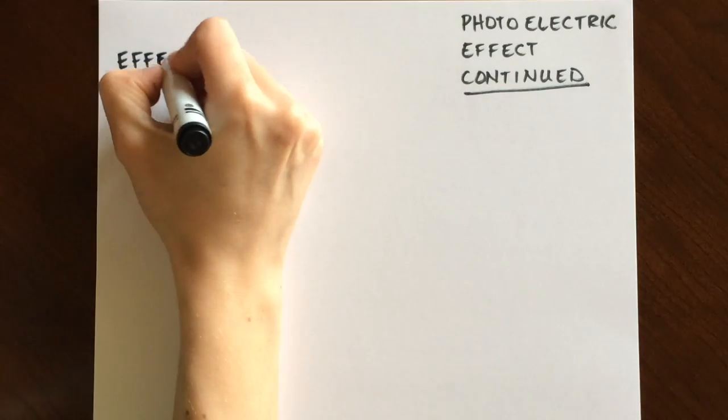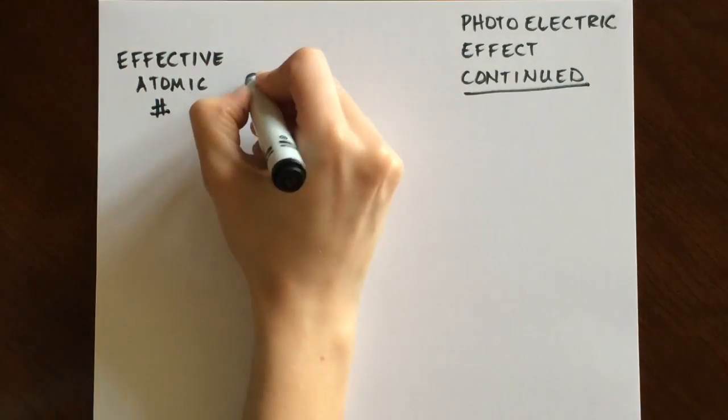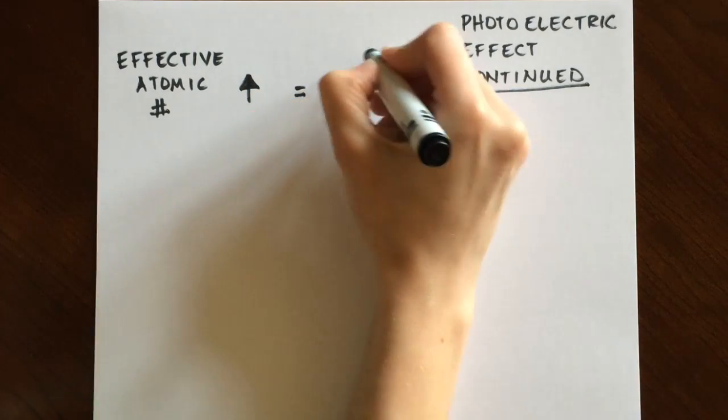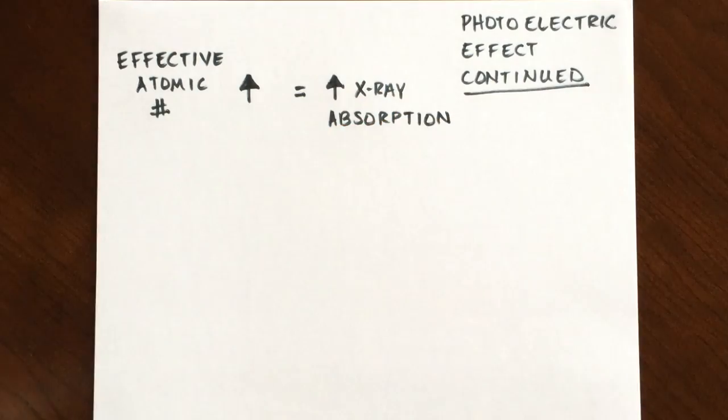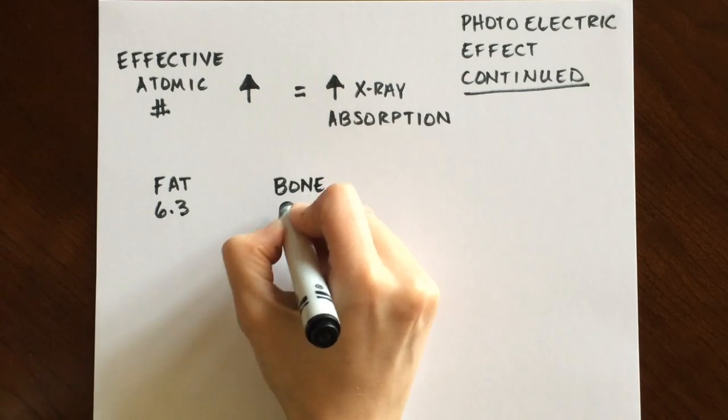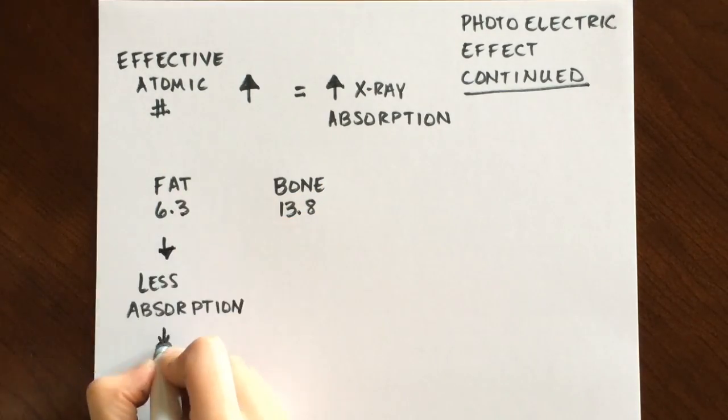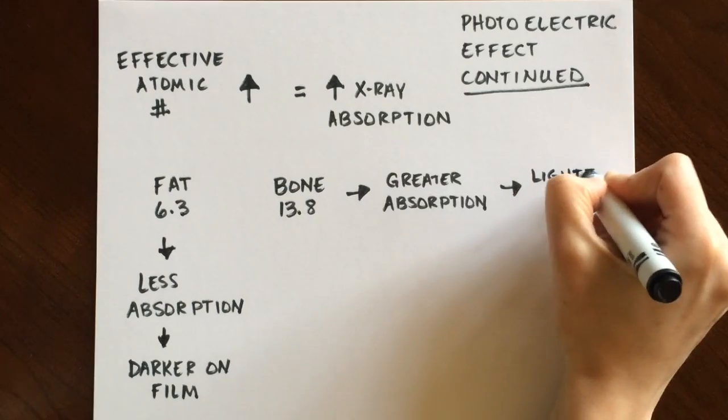It should also be noted that the effective atomic number of the material does have an effect on this type of interaction. Remember in Compton effect, the atomic number did not. With the photoelectric effect, the higher the effective atomic number, the greater the x-ray absorption. For example, the effective atomic numbers of fat and bone are 6.3 and 13.8 respectively. Greater x-ray absorption will occur with bone and lead to brighter white areas on the radiograph.